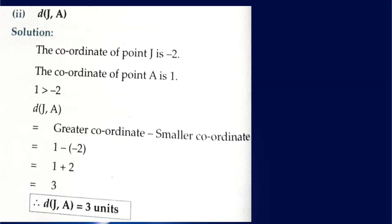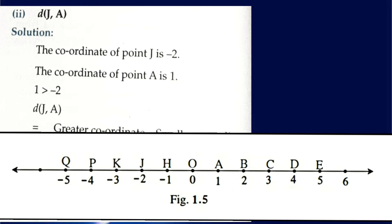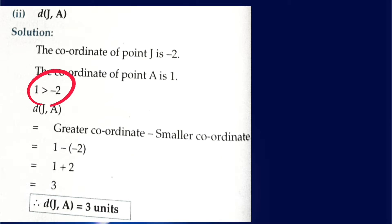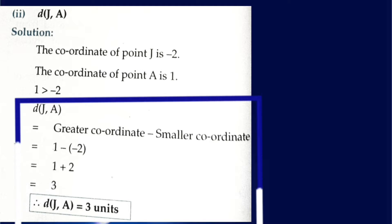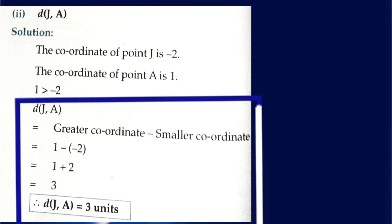The second one is the distance between point J and A. The coordinate of point J is minus 2 and the coordinate of A is 1. A positive number is always greater than any negative number, so 1 is greater than minus 2. Distance between J and A equals greater coordinate minus smaller coordinate: 1 minus (minus 2) equals 1 plus 2, because minus minus is plus.